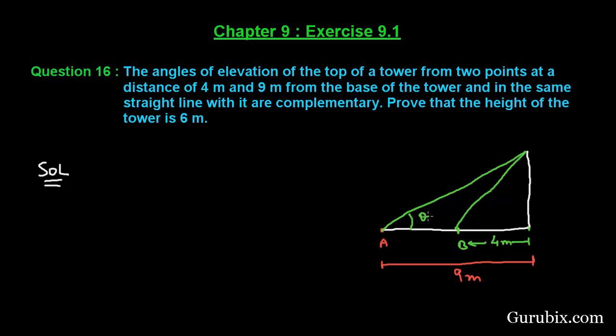So if this angle is theta, then this angle will be 90 degrees minus theta. So suppose this is point C and this is point D, and this is the height of the tower. Let the height of the tower equal H meters.